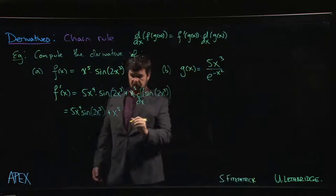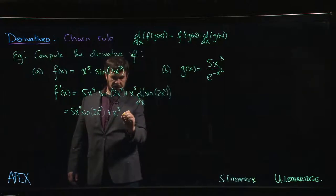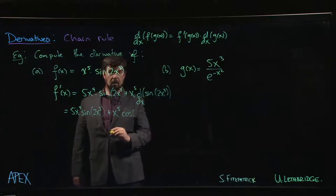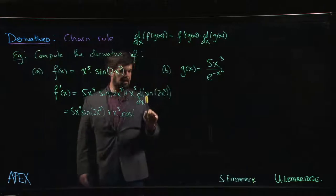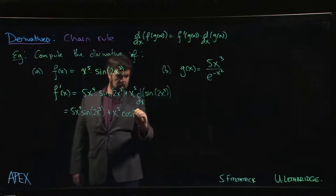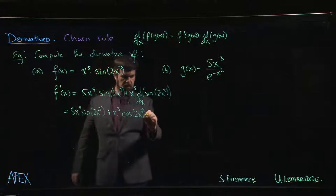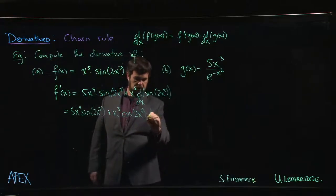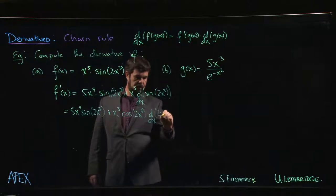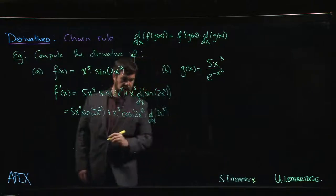We first take the derivative of the outside function. So the derivative of the side is cosine, but we evaluate it at the inside. So we plug in 2x cubed. And finally, we need to multiply by the derivative of the inside.